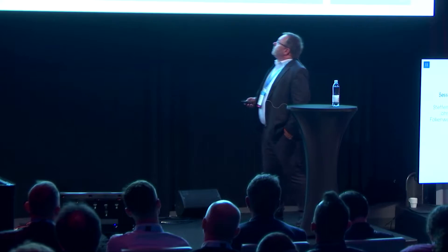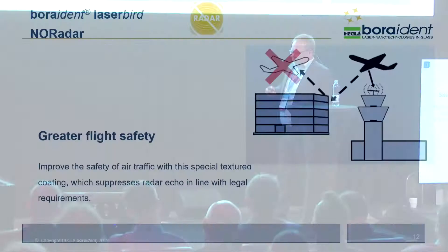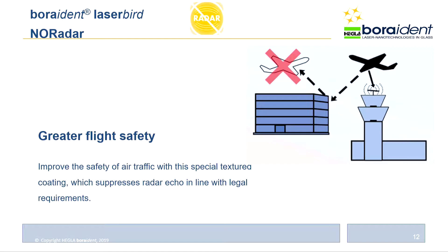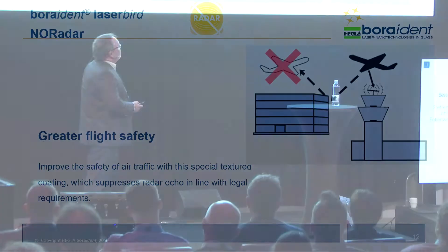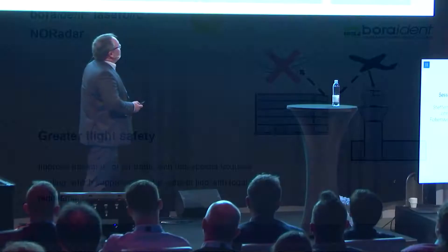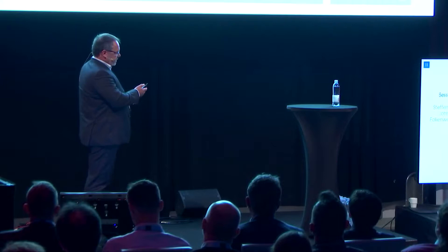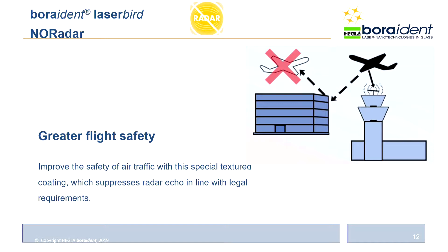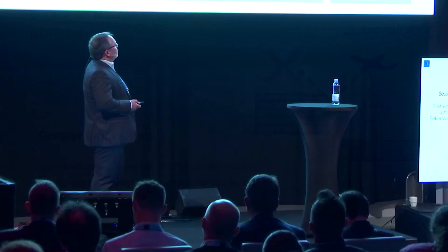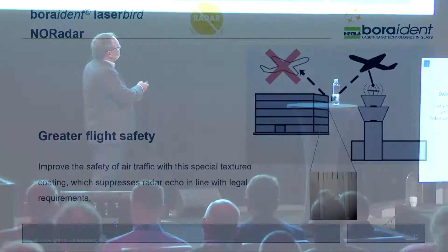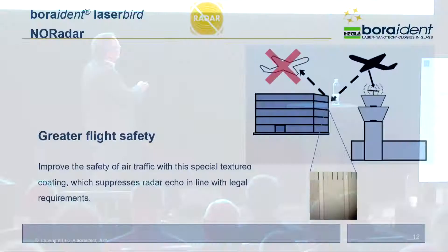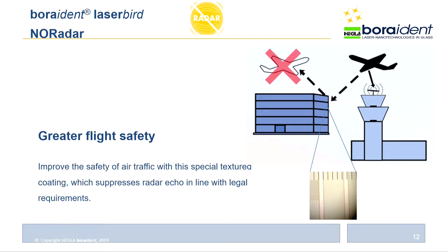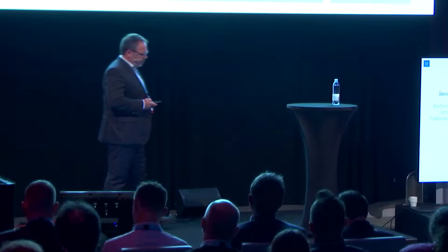The next application for laser technology on coated glass is avoiding radar interference at airports. The problem: radar radiation from the tower is reflected on high-rise buildings around the airport, potentially causing the controller in the tower to see two airplanes — which is dangerous. By using the laser to create isolated lines inside the glass coating at specific distances based on the radar radiation wavelength, it is possible to damp the reflection so the controller sees only one airplane.